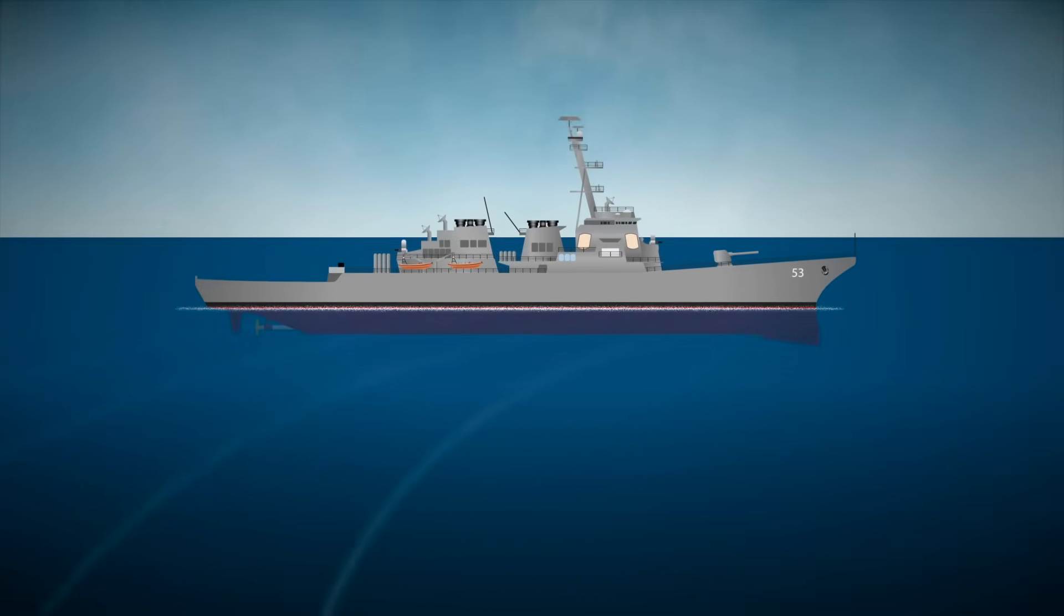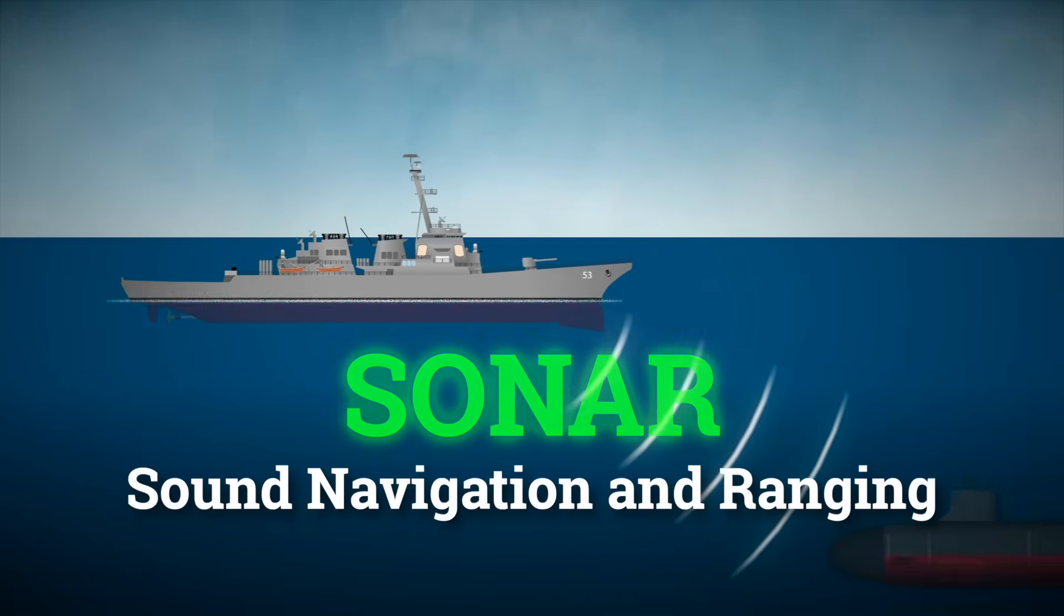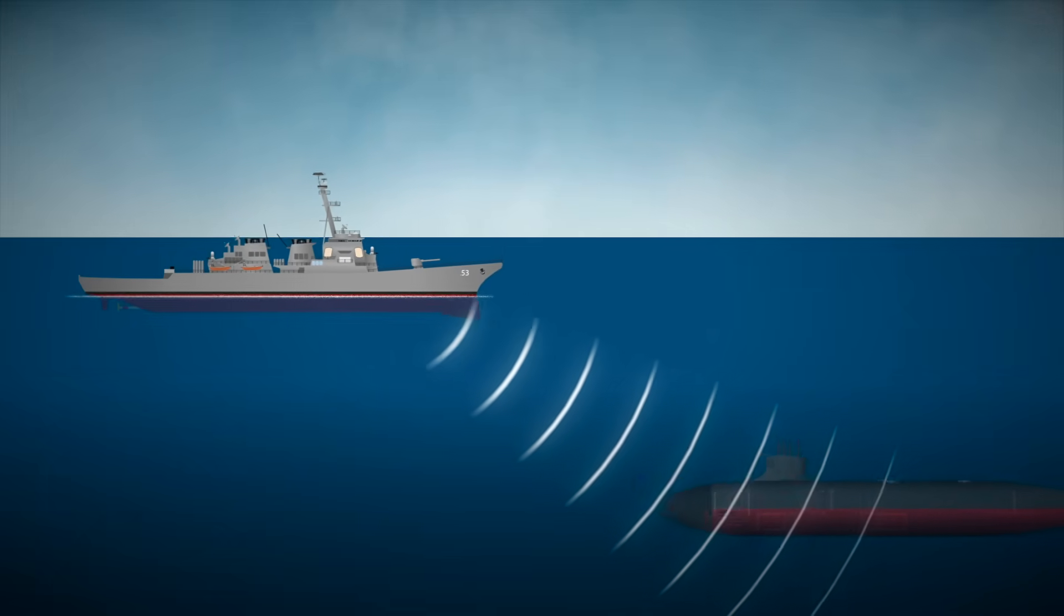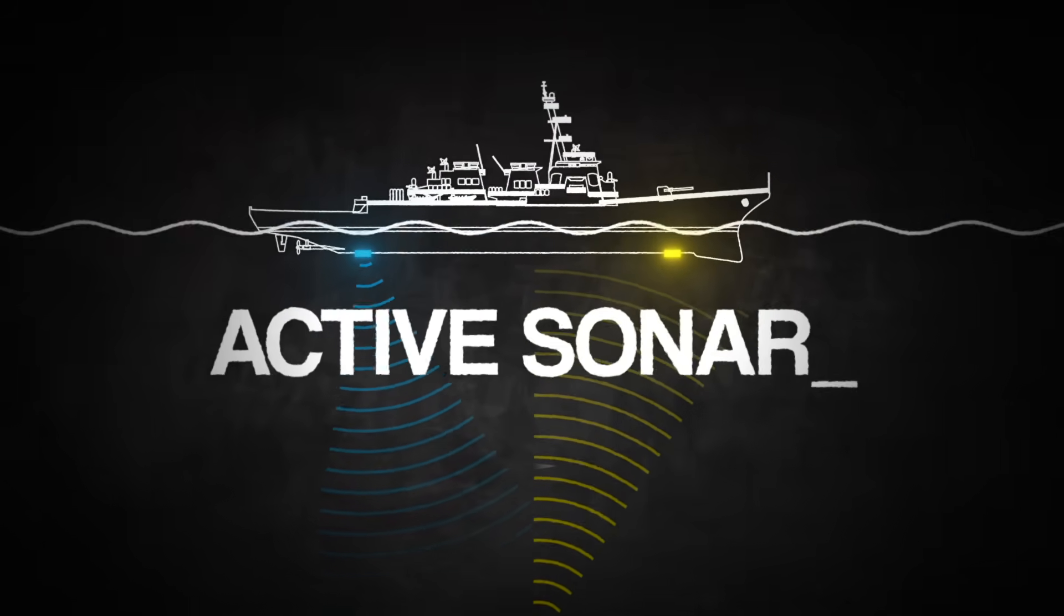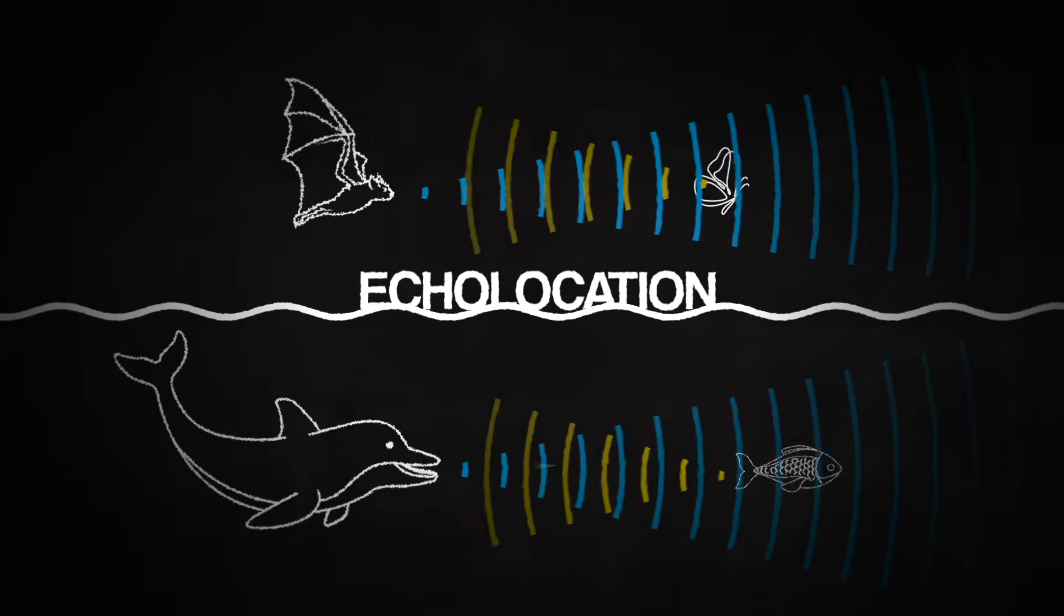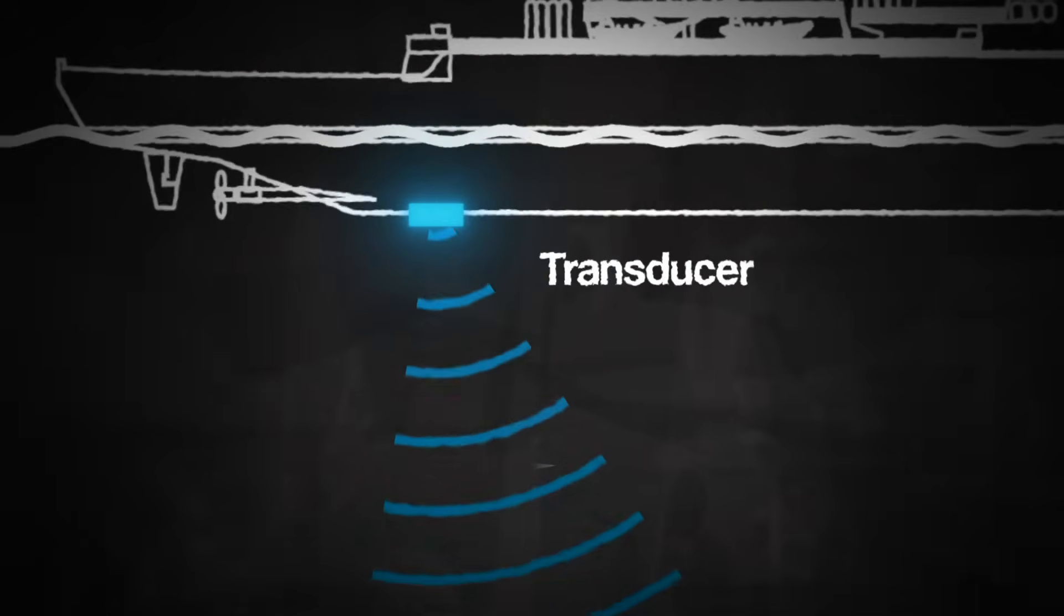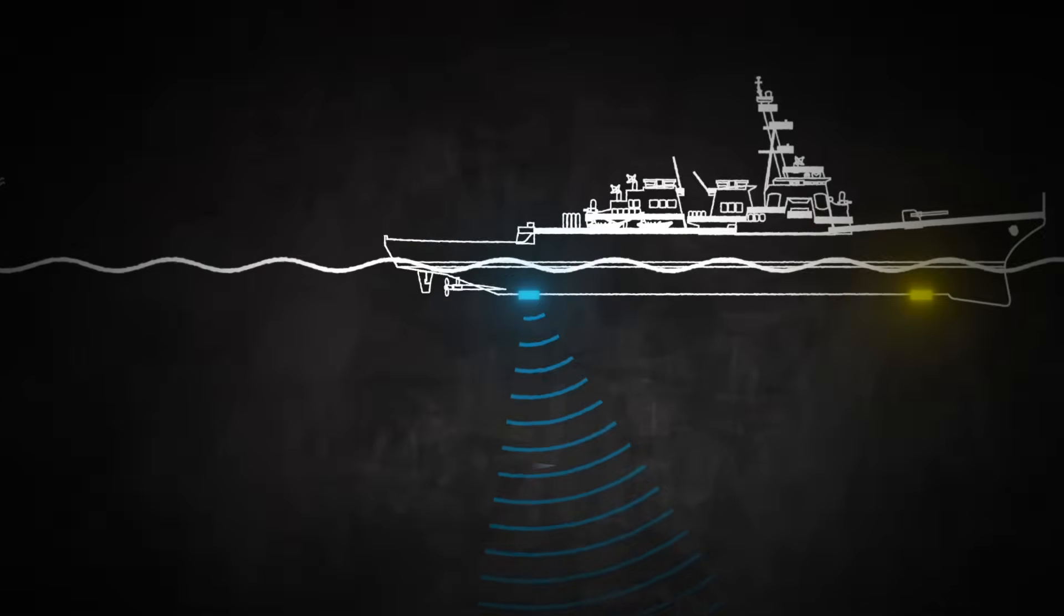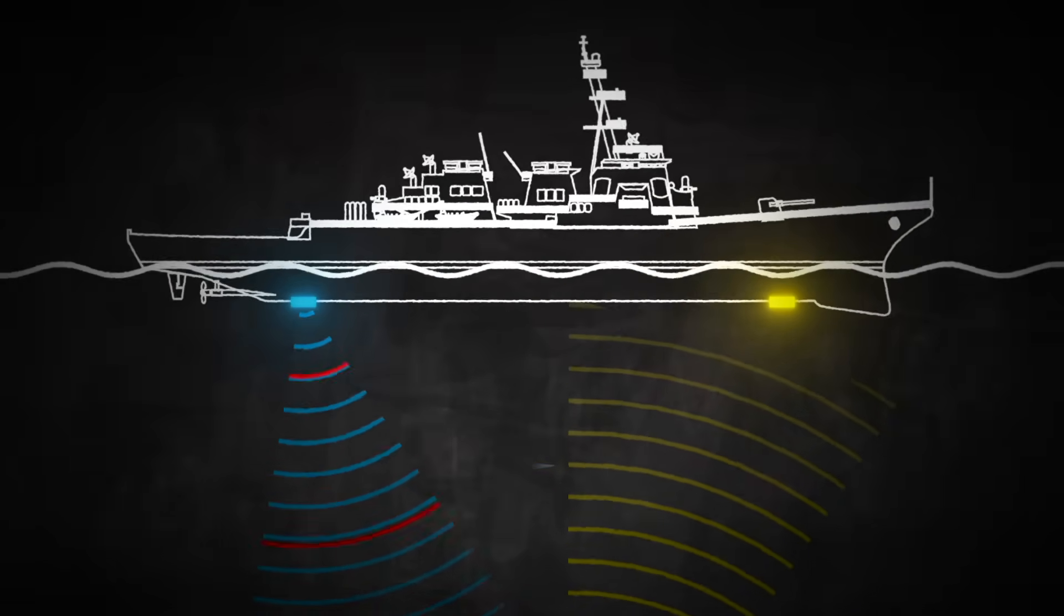When navies want to track each other underwater, they use sonar, which stands for Sound Navigation and Ranging. There are two main types. Active sonar works a bit like echolocation, the same technique bats and dolphins use. A device with sound sensors called transducers sends out a sound pulse, what sailors call a ping, and then listens for the echoes bouncing off objects in the water.